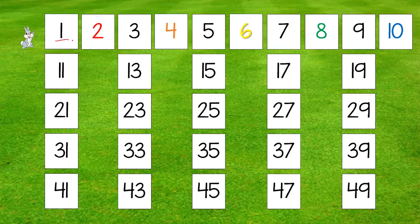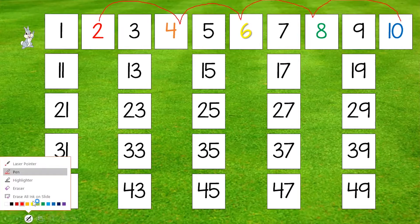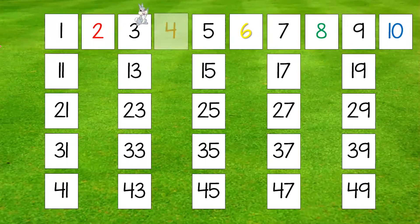Instead of counting 1, 2, 3, 4, 5, 6, we're not going to do that. What we're going to do is skip 1, 3, 5, 7, and 9 to count 2, 4, 6, 8, and 10. How about let's look at bunny hop his way to number 10 — 2, 4, 6, 8, and 10! That's right, little bunny! And that's how you skip count by 2.